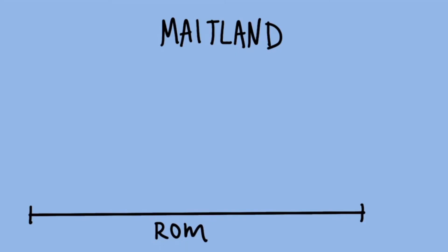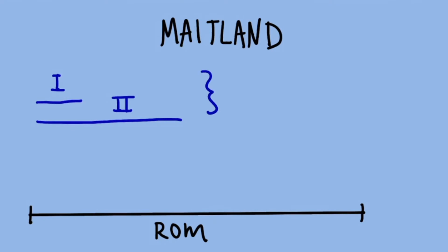Now the amount that you stretch that capsule out is pretty important. The Maitland grades help us determine how much we're stretching and what function that serves for the patient. Grade one mobilizations are really small mobs at the beginning range of motion. Grade two mobilizations are larger ranges up to about the midpoint of the range of motion. Both grades one and two are used to help decrease pain for your patients.